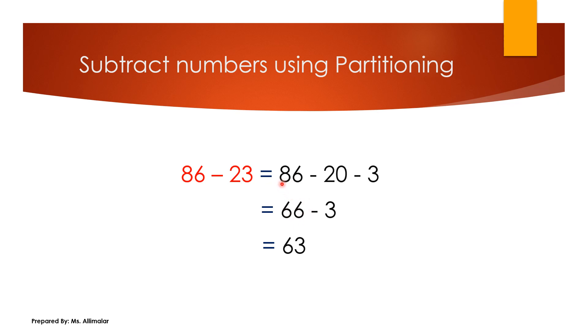Now look at tens. 8 tens here, 2 tens here. Take 8 minus 2. What is 8 minus 2? 8, 7, 6. This is tens place. So here, 86 minus 20, you are getting 66.